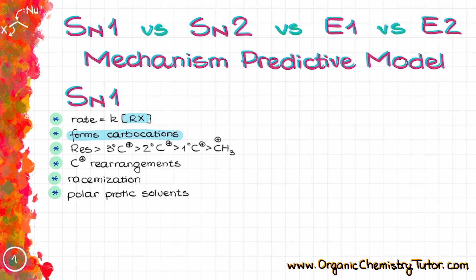Because of the carbocation intermediates we are going to see racemization, which means the loss of stereochemistry and possible carbocation rearrangements. Also, since the primary carbocations and CH3+ are too unstable, we are not really going to see SN1 reactions with primary substrates unless they are resonance stabilized.